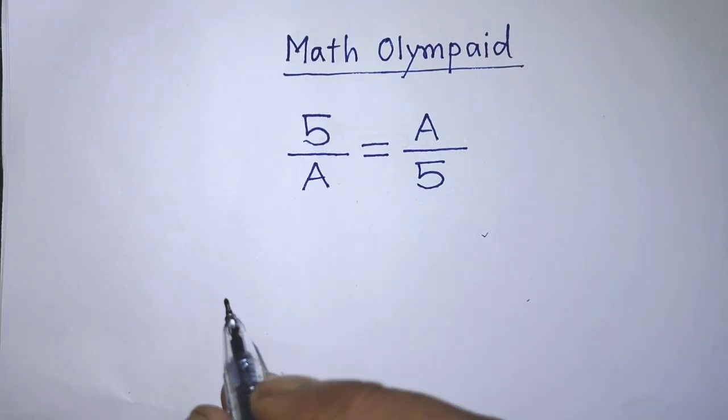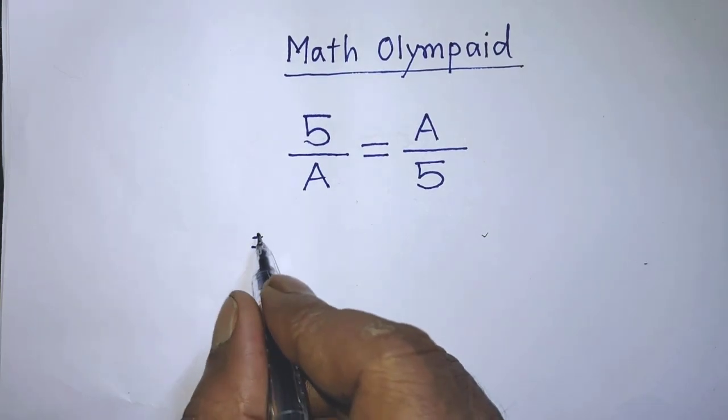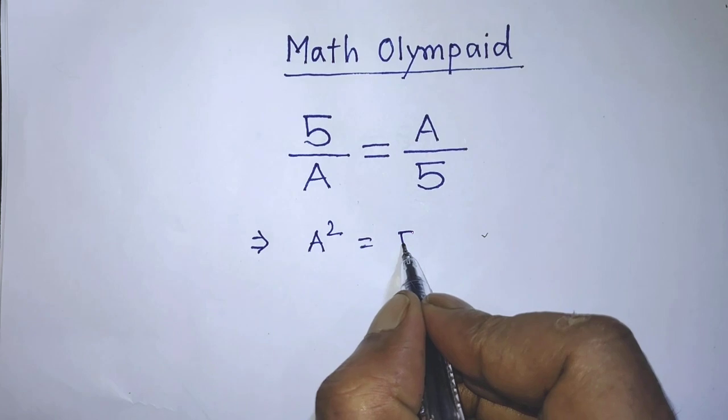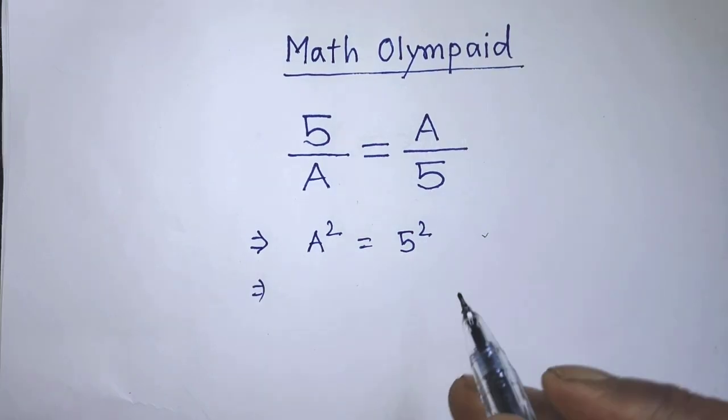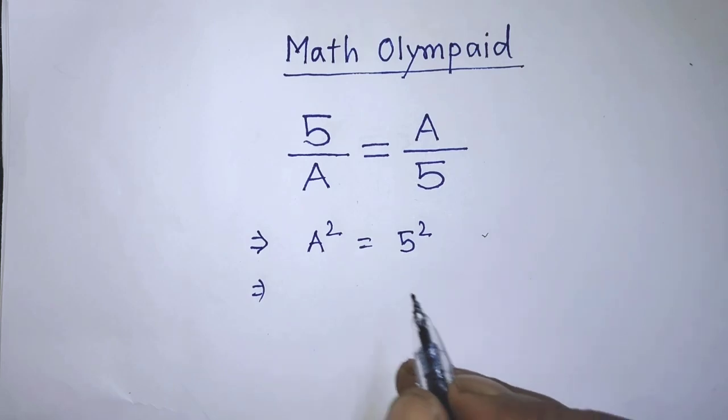In the first step of the solution, it will be A squared equals 5 to the power 2. Now we have to transpose 5 to the power 2 from right hand side to left hand side.